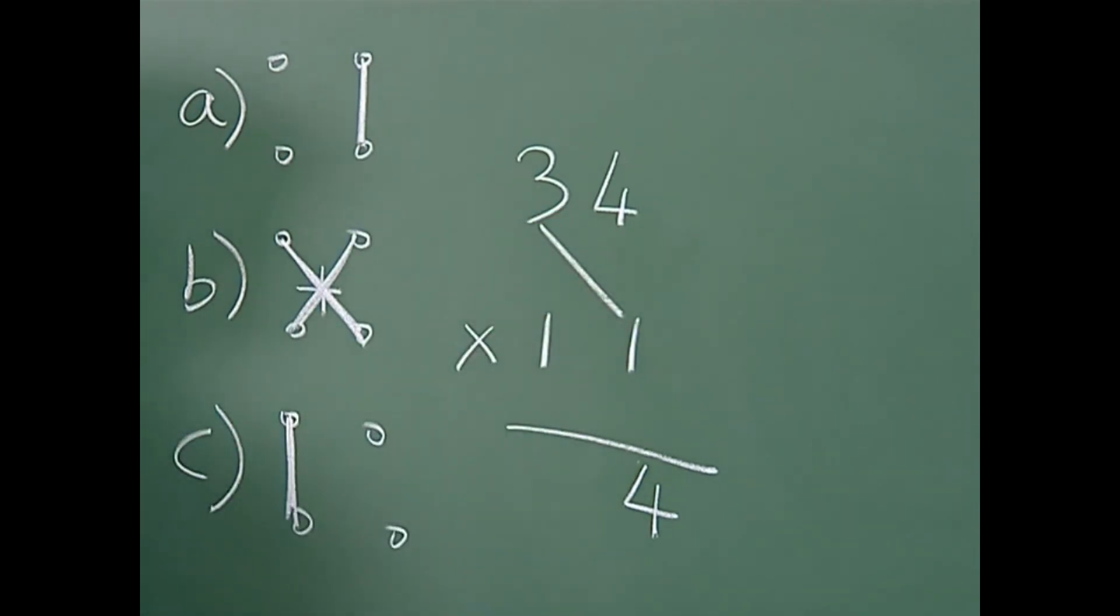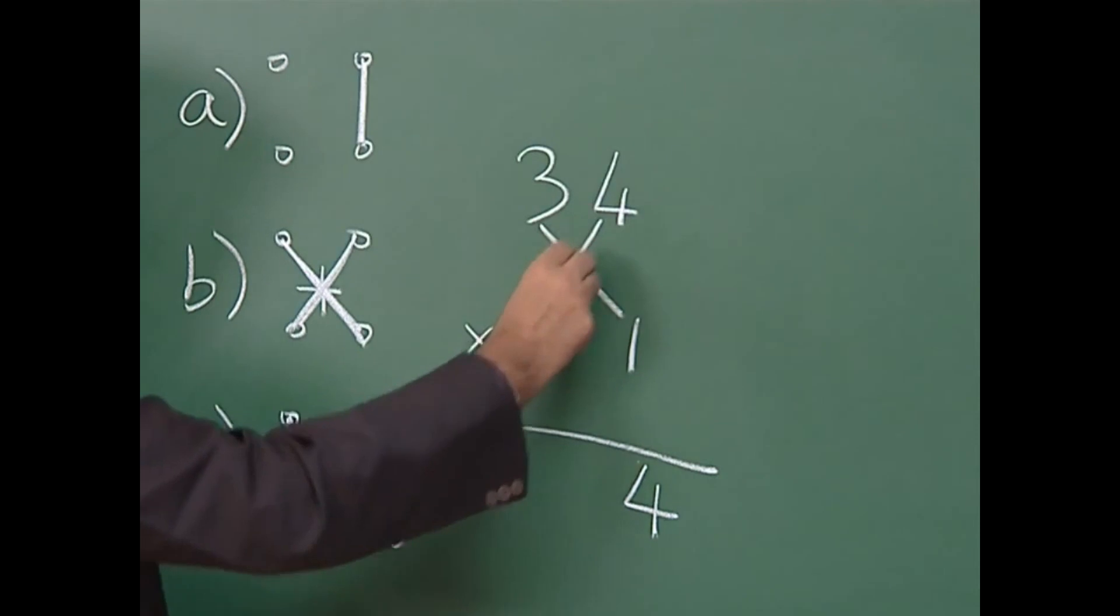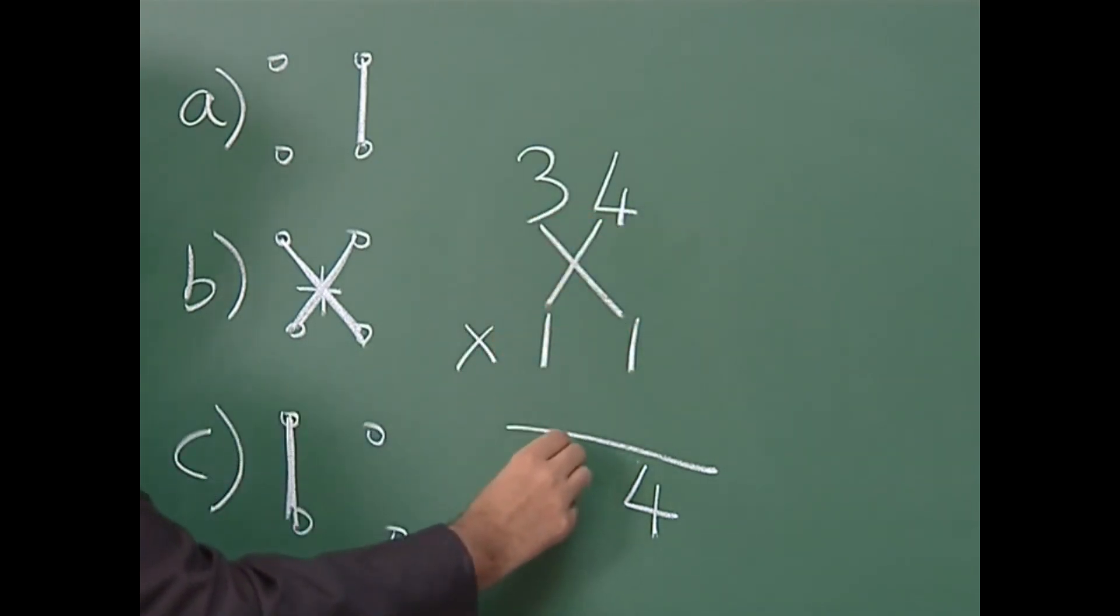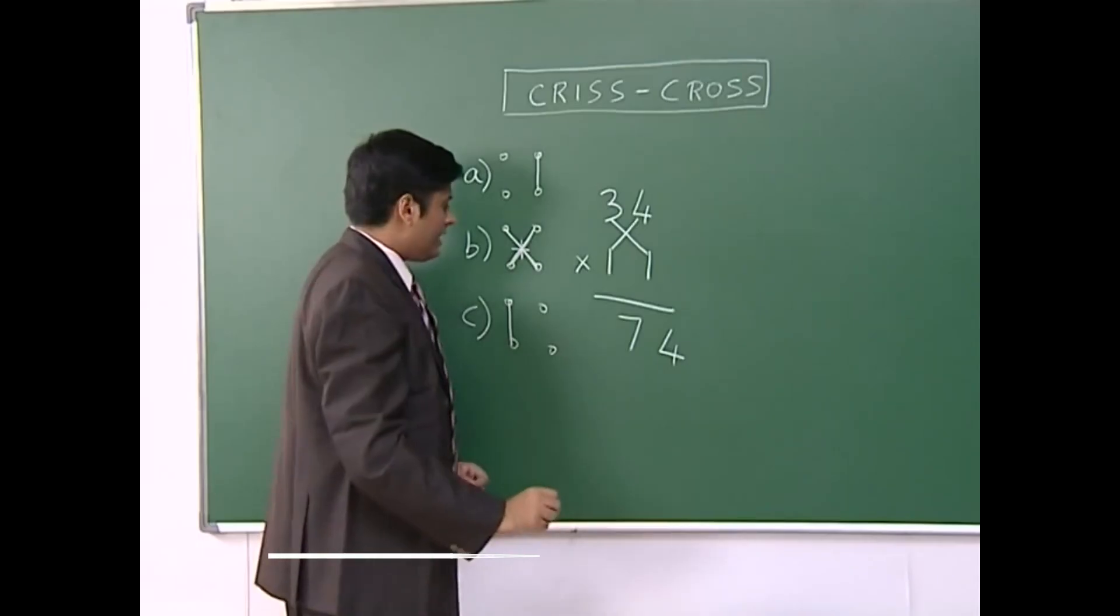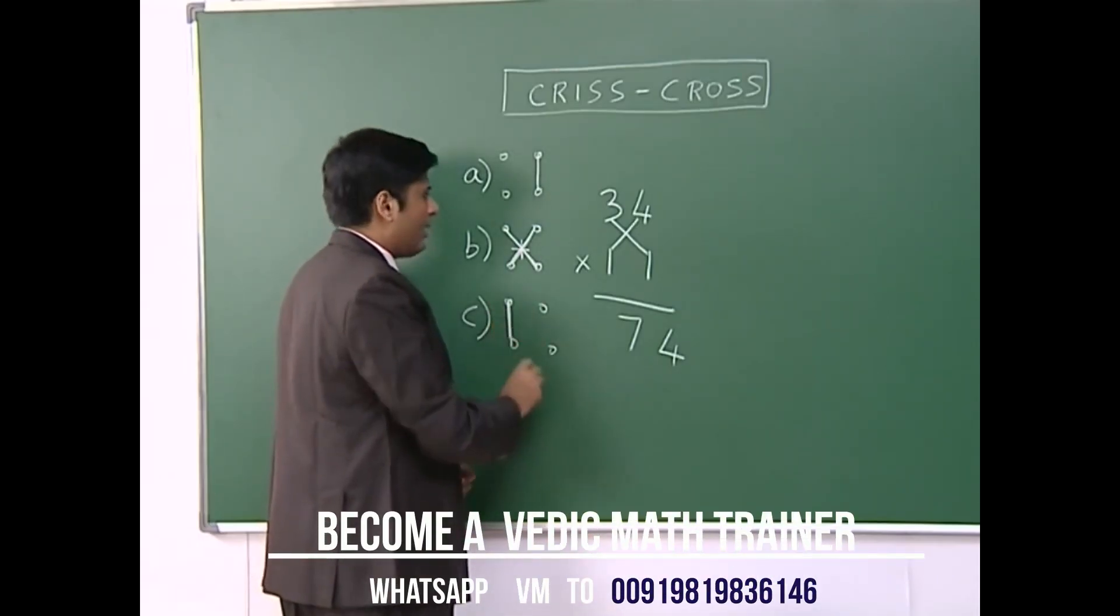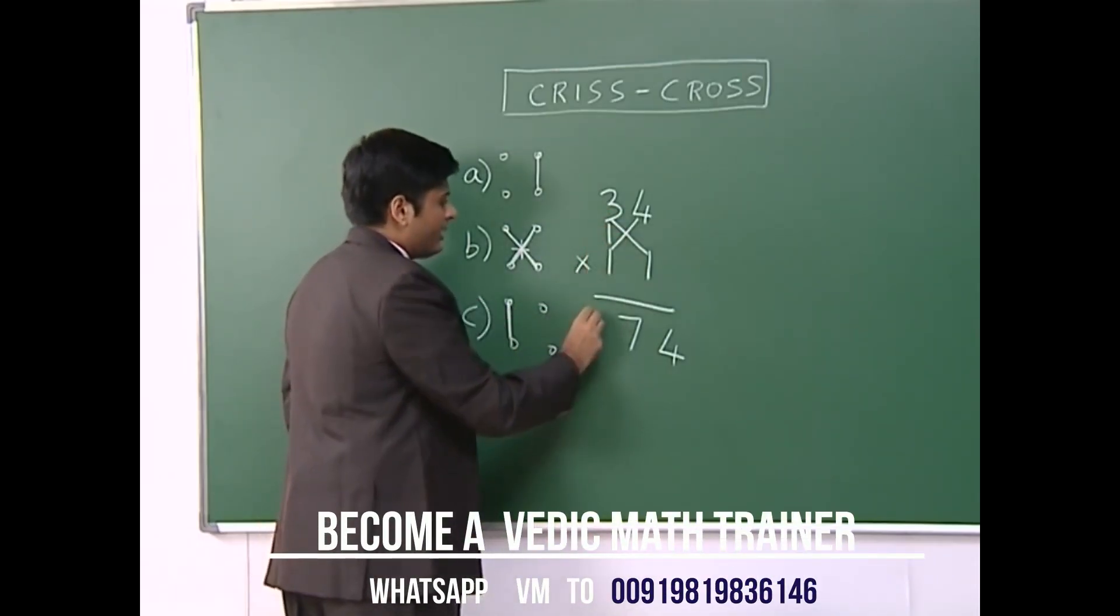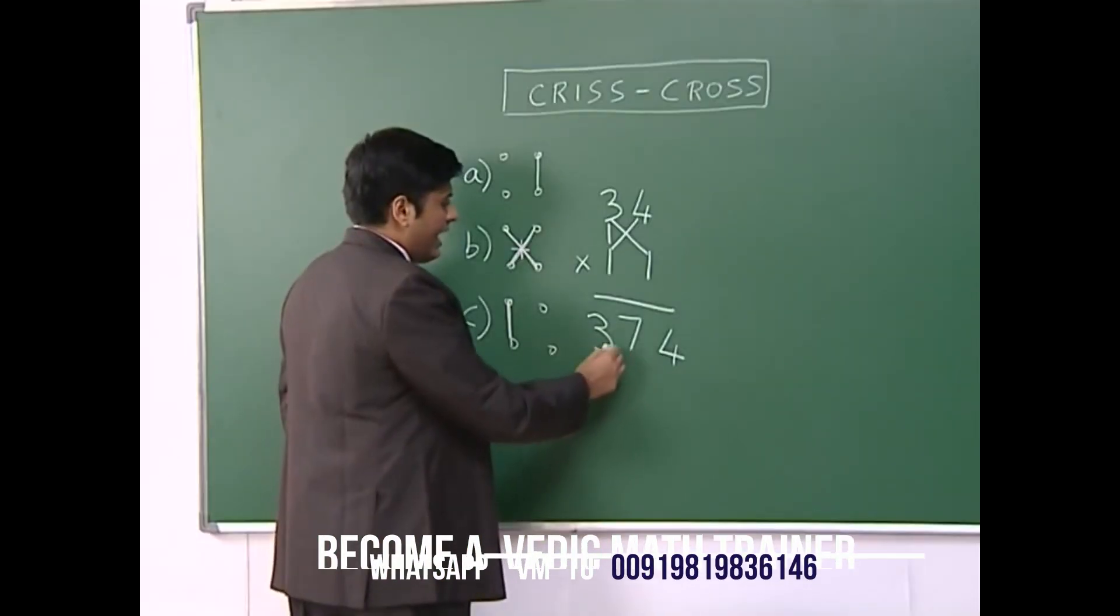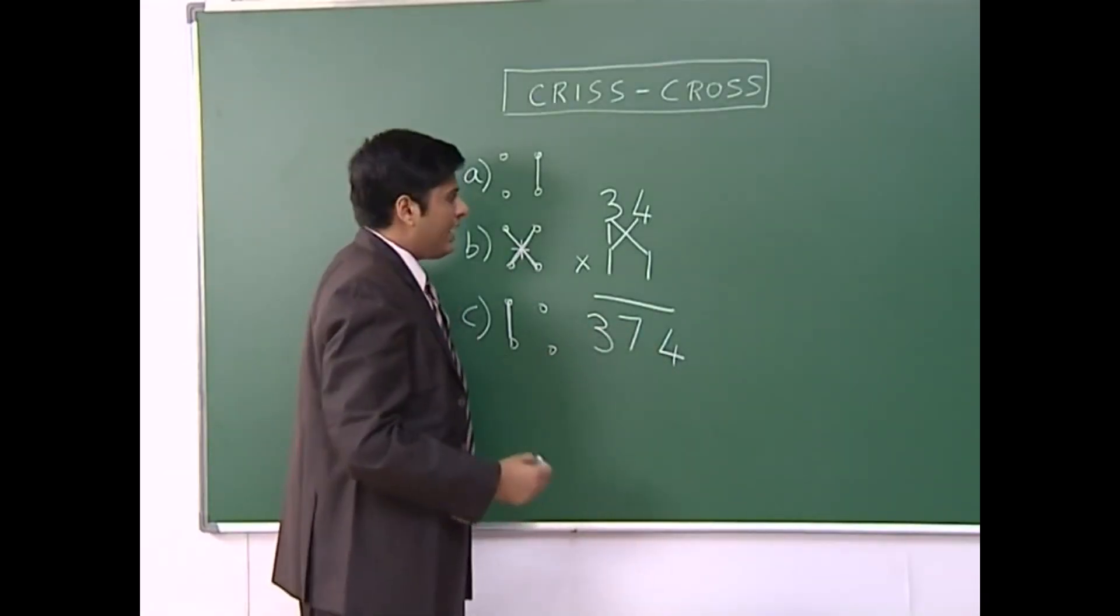3 ones are 3. Keep 3 in your mind. 4 ones are 4. So 3 and 4 gives 7. Last step says multiply these two numbers. 3 times 1 is 3. My final answer is 374. Like that.